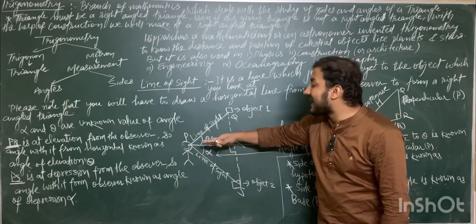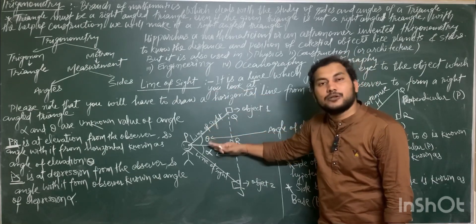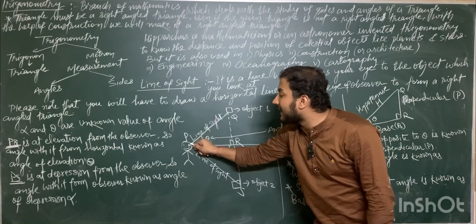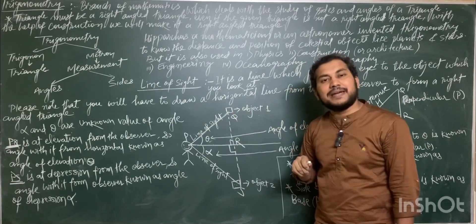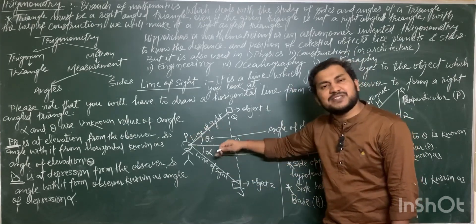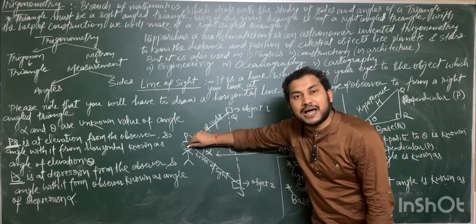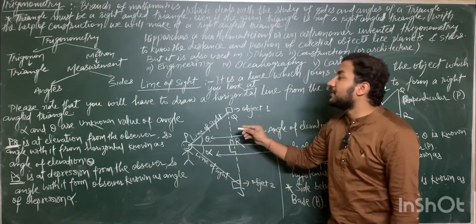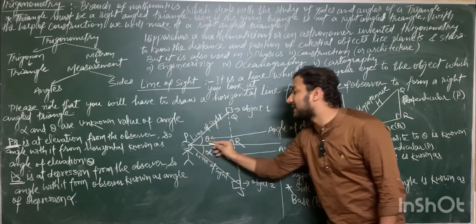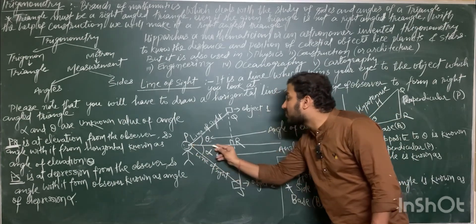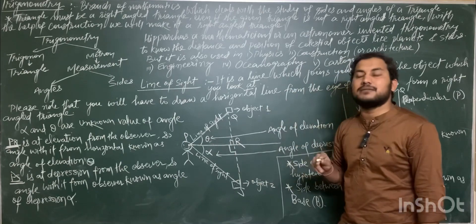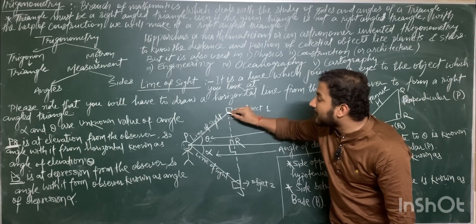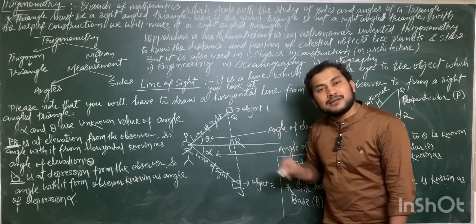Suppose you are standing here — this is your eye — and there are two objects: one object is at an upper level from you and the second one is at a lower level from you. If you look at the object which is at upper level, then the line joining your eye to that object is the line of sight. Similarly, if you look at the object at the lower level, the line joining your eye to that object is also the line of sight. You draw a horizontal line from the eye of the observer and then draw a perpendicular line from the object to that horizontal line to make a right angle triangle.